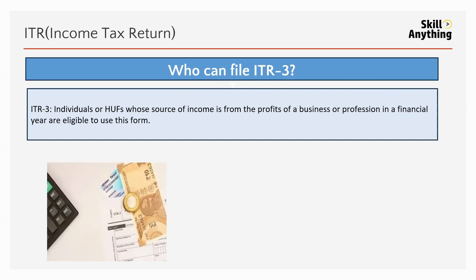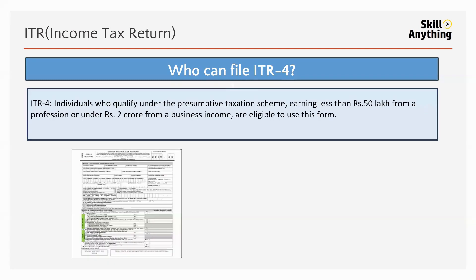Who can file ITR-3? An individual and HUF — Hindu Undivided Families — whose source of income is from property of business or profession in a financial year can use this form, ITR-3, to file their income tax return.